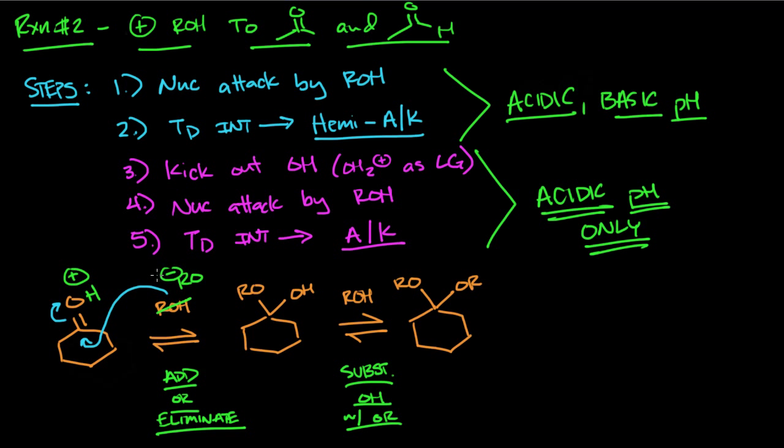So acidic and basic pH both speed up the formation of the hemiacetal or hemiketal - one by activating the electrophile and the basic conditions activate the nucleophile. Exact same thing that we saw with the addition of water to aldehydes and ketones.